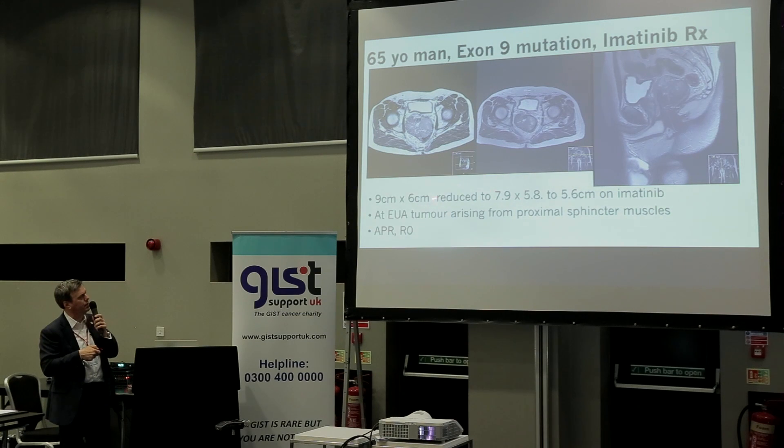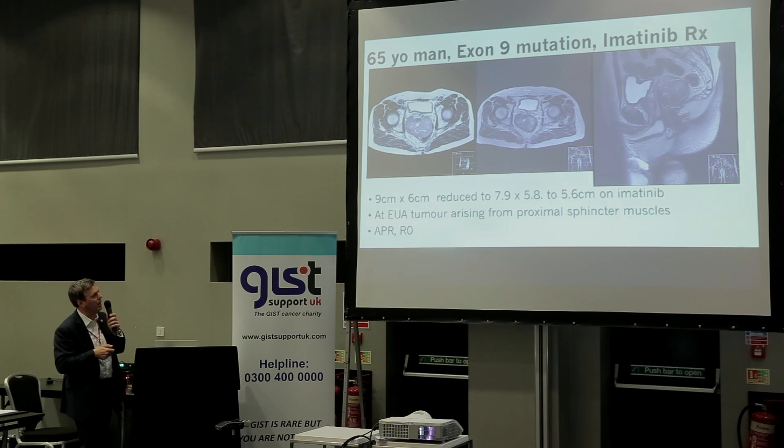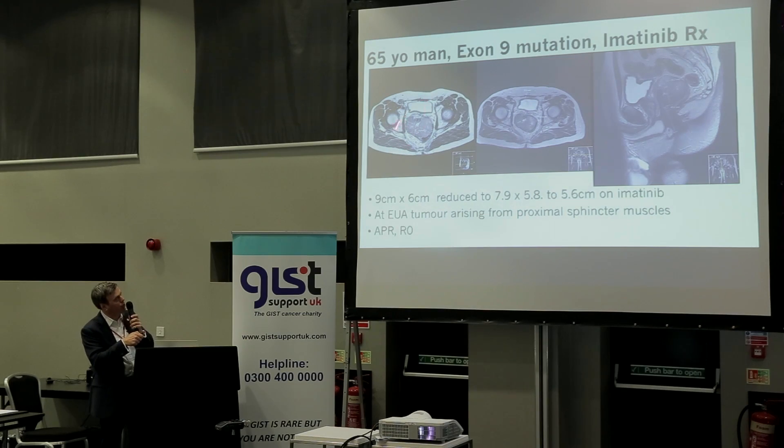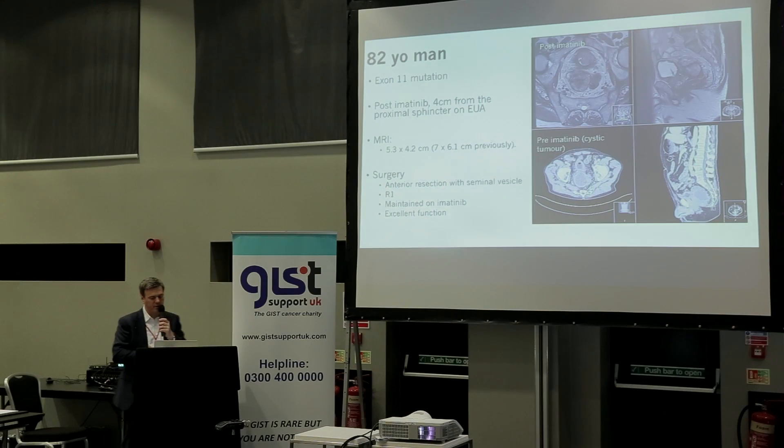Here are examples of rectal GISTs. In the pelvis there's very little space — you can see the bladder in front, the hips and bones. This tumour started off at nine centimetres, then reduced and reduced, and with the shrinkage there's more space to operate. In this case I couldn't spare the rectum, but it allowed much easier surgery. If this had been an adenocarcinoma or before imatinib, we would have had to think about taking out the bladder. In another case, a very cystic tumour shrunk back beautifully, allowing reconstruction with very good function.